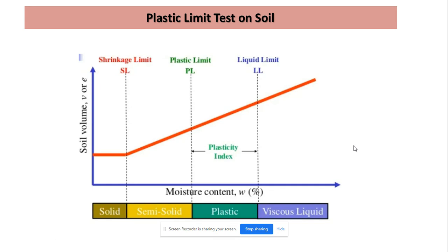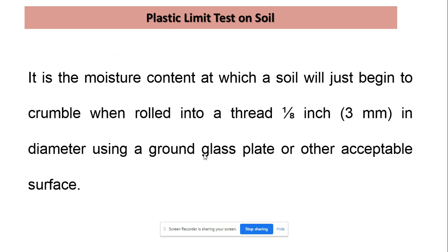The Atterberg limits are the boundary water contents at which soil changes its form or phase from one phase to another. We have different Atterberg limits: liquid limit, plastic limit, and shrinkage limit. In particular, the plastic limit is the water content at which the soil changes from semi-solid state to plastic state, and that boundary water content is known as the plastic limit of soil.